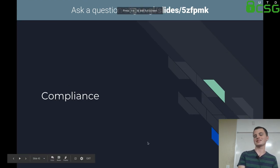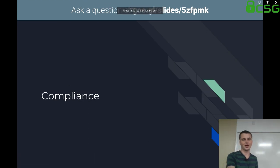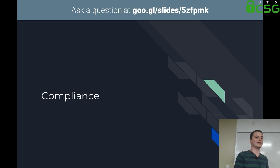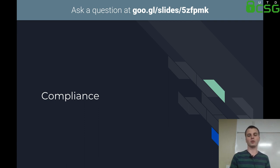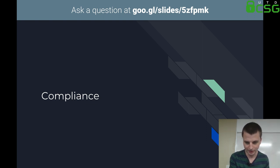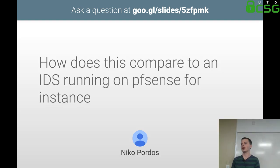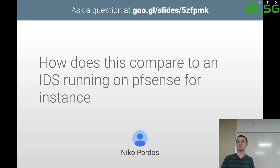Moving on to compliance. If you're dealing with any system that touches private customer data, payment card information, medical information, FERPA data, or any legally regulated information, compliance frameworks become relevant. On the comparison between AIDE and running an IDS on pfSense: they serve different purposes — pfSense-based IDS operates at the network level, while AIDE is a host-based intrusion detection system focused on file system integrity.